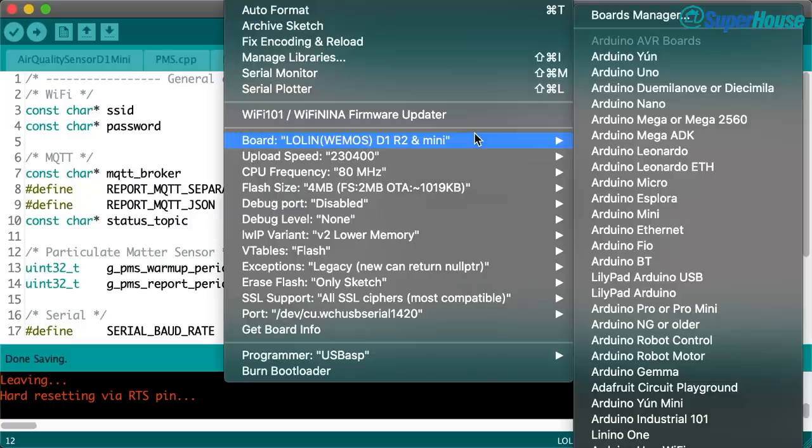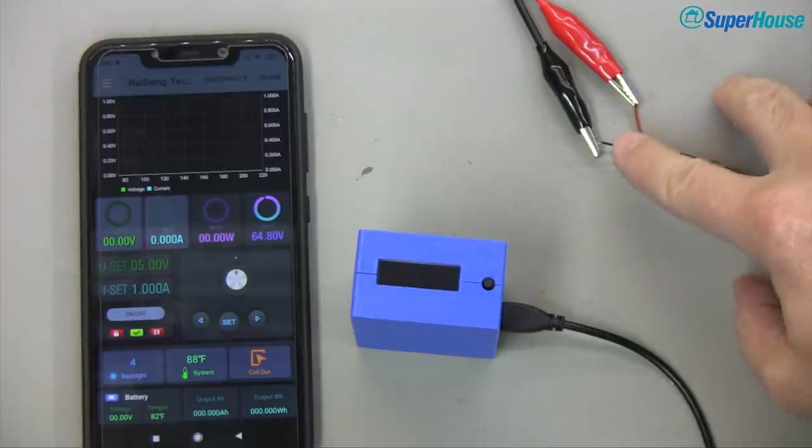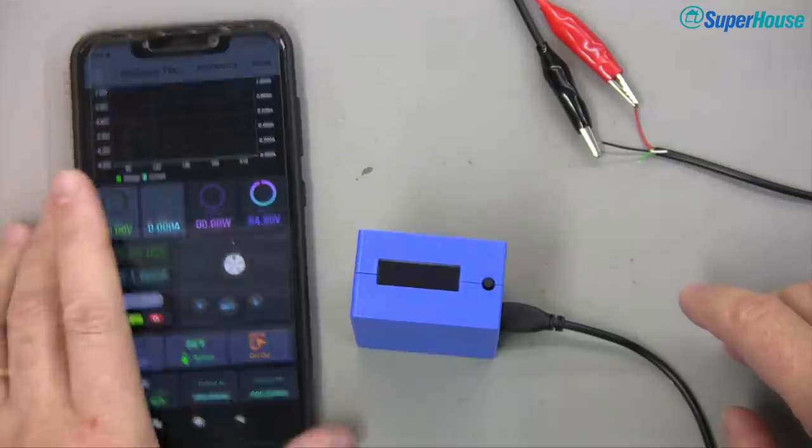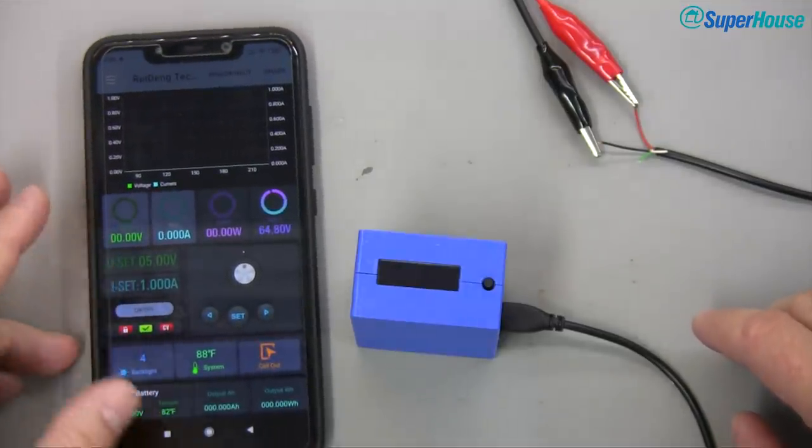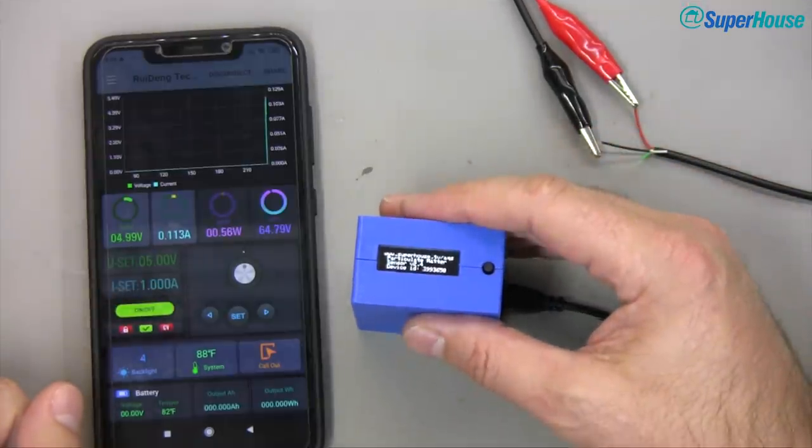So with those values set just select the target device as you would for any regular Arduino project and upload it. Once you've uploaded the sketch the air quality sensor will reboot and you'll start getting some information coming up on the display. You'll also be able to toggle through different screens. I'm going to hook this one up to a bench power supply now so that we can see what happens when it starts up and also see what happens with the power consumption and the sleep modes of the sensor. Now I've connected this up to a USB cable that I've hacked and plugged into my RD Tech lab power supply and I've got the interface for it up here on my phone. I've got a Wi-Fi connection to the power supply.